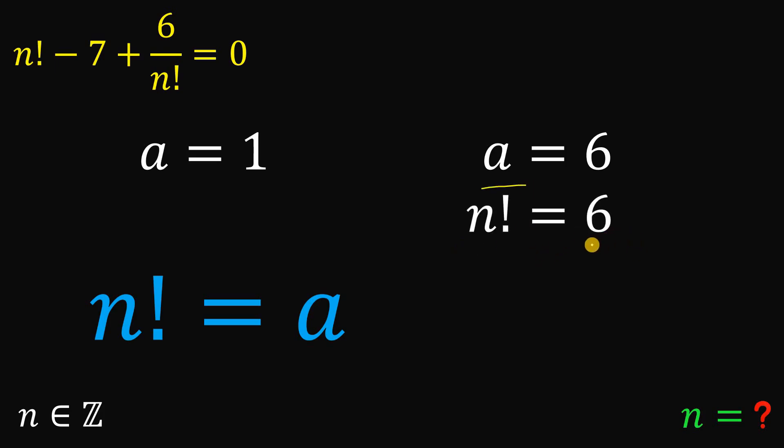So n factorial equals 6. Now take note, 6 is 3 times 2 times 1 or simply 3 factorial. So we can say that n equals 3. So here's the first value for n.